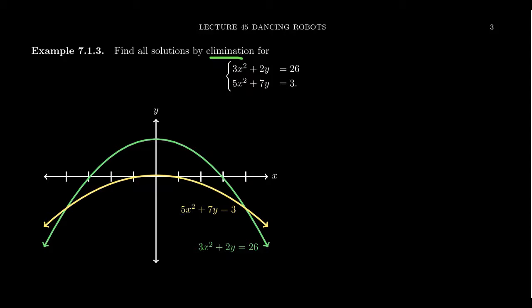So as you can see right here, we have a system with two equations and two unknowns: 3x² + 2y = 26, and 5x² + 7y = 3. These are two nonlinear equations, and if we look at their graphs, we actually end up with the graphs of some parabolas.